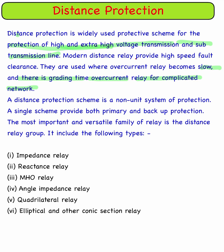A distance protection scheme is a non-unit system of protection, and a single scheme provides both primary and backup protection. The most important and versatile family of relays is the distance relay group. The different types of distance relays include: impedance relay, reactance relay, mho relay, angle impedance relay, quadrilateral relay, and elliptical and other conic section relays. We will discuss each one by one.